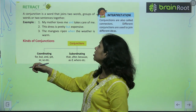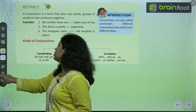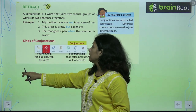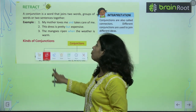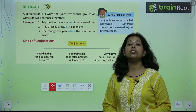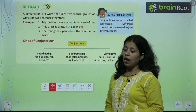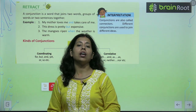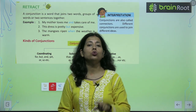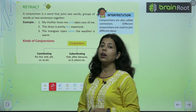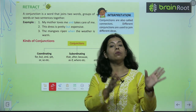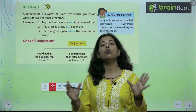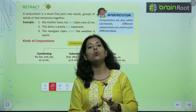A conjunction is a word that joins two words, group of words, or two sentences together. Conjunction ek wo word hota hai jo do shabdo ko, ya phir do shabdo ke samung ko, ya phir do sentences ko — do waqiyo ko — jodta hai.